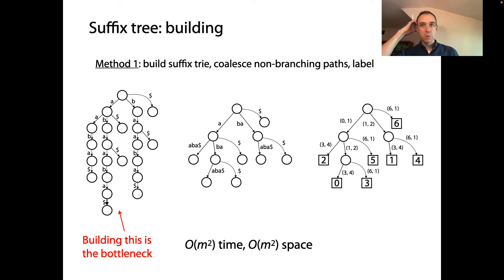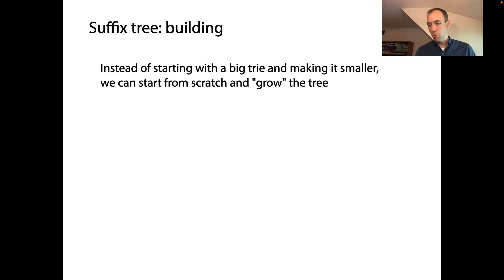Rather, what we would rather do would be to start from scratch and build up the suffix tree data structure, build that data structure up starting from nothing so that at no point do we get to something that's bigger than O(M). Instead of starting with the big trie and trying to make that smaller, we can start from scratch, from nothing, and grow the tree directly and just skip the trie. Don't even build the trie.